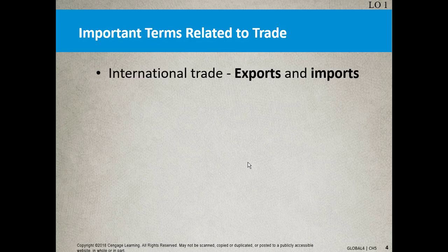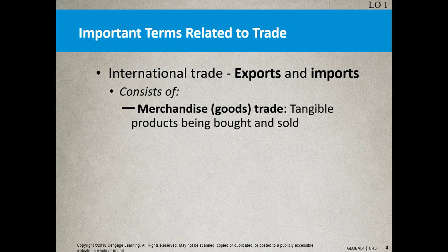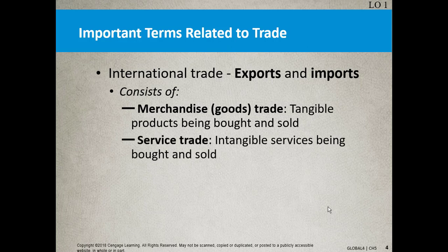Let's get into the important terms related to trade. International trade is about exports and imports — that's all it means. What does it consist of? Merchandise trade, which is really about goods — the tangible products being sold and bought. And then of course service trade — the intangible services being bought and sold. You can export services as well, so make sure you understand that.